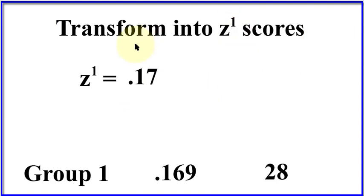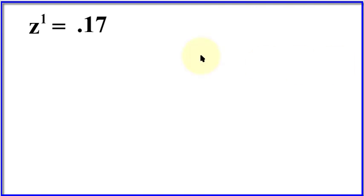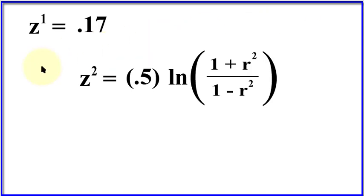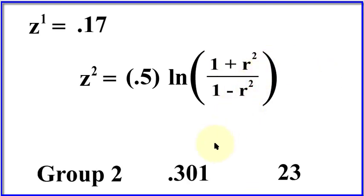So 0.5 times that natural log is 0.17. That's group one's z-prime score. I'm going to move it up here. Now we're going to do group two. Same thing, right? But again, the two doesn't mean squared—it just means we're doing the second group. And there's our group two data: correlation, sample size.